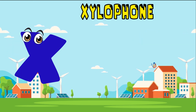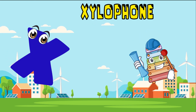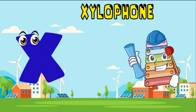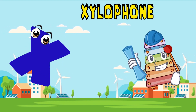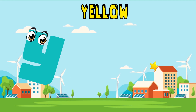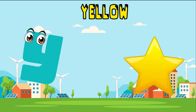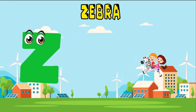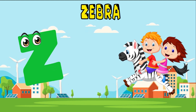X is for xylophone, z-z-xylophone. Y is for yellow, y-y-yellow. Z is for zebra, z-z-zebra.